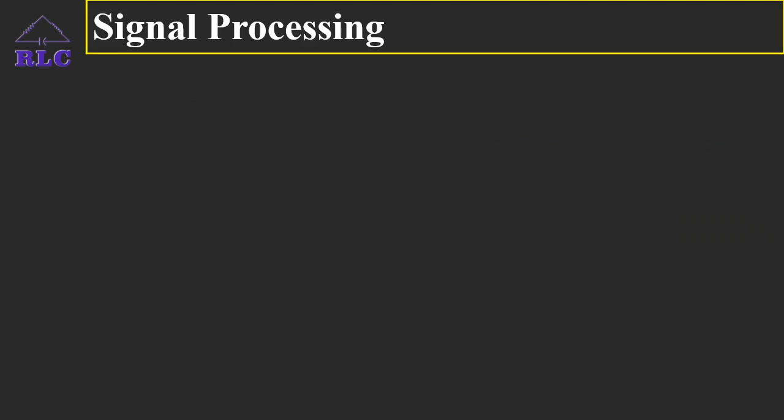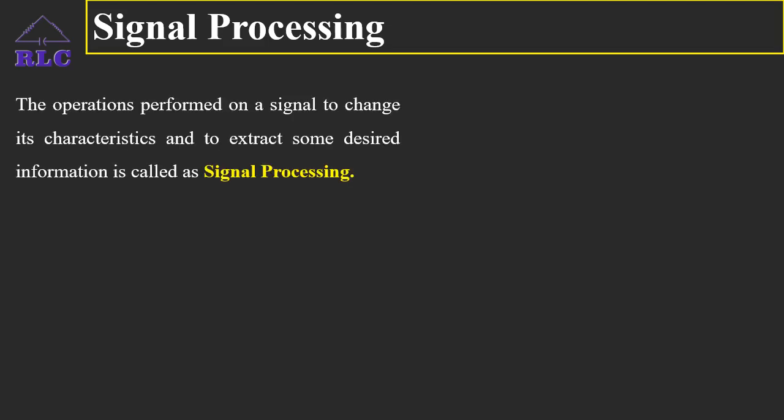Signal Processing. A system performs many operations such as filtering, convolution, time shifting, and time scaling on signals. The operations performed on a signal to change its characteristics and to extract some desired information is called signal processing. There are two main types of signal processing: one is analog signal processing and the other one is digital signal processing.